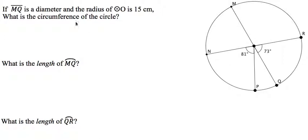We have this picture here and we're told that MQ is a diameter and the radius of the circle is 15 centimeters. So we can label this length here 15 centimeters. Really any of these radii would all be 15 centimeters.